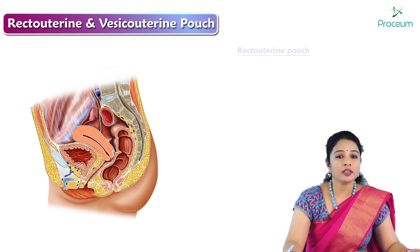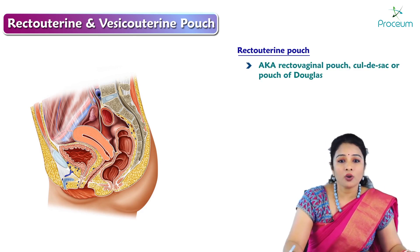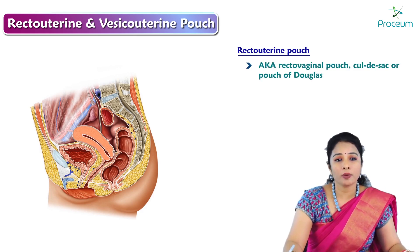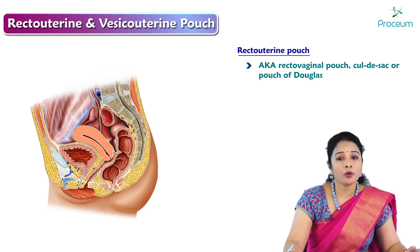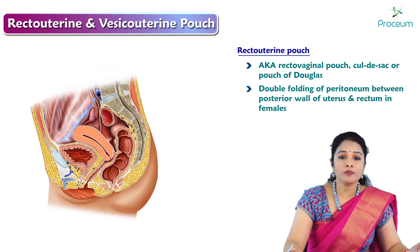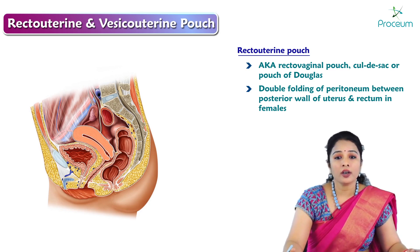Starting with the recto uterine pouch, otherwise called as the recto vaginal pouch, which is a cul-de-sac or the pouch of Douglas. It is a double folding of the peritoneum between the posterior wall of the uterus and the rectum in females.